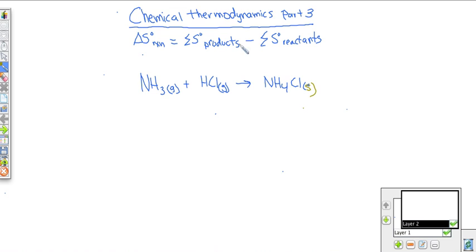And you can find these values in the back of your book, easy enough to look up. And so let me give you a quick little example problem here. We have NH3, ammonia gas, plus hydrochloric gas, and that's going to go to ammonium chloride.